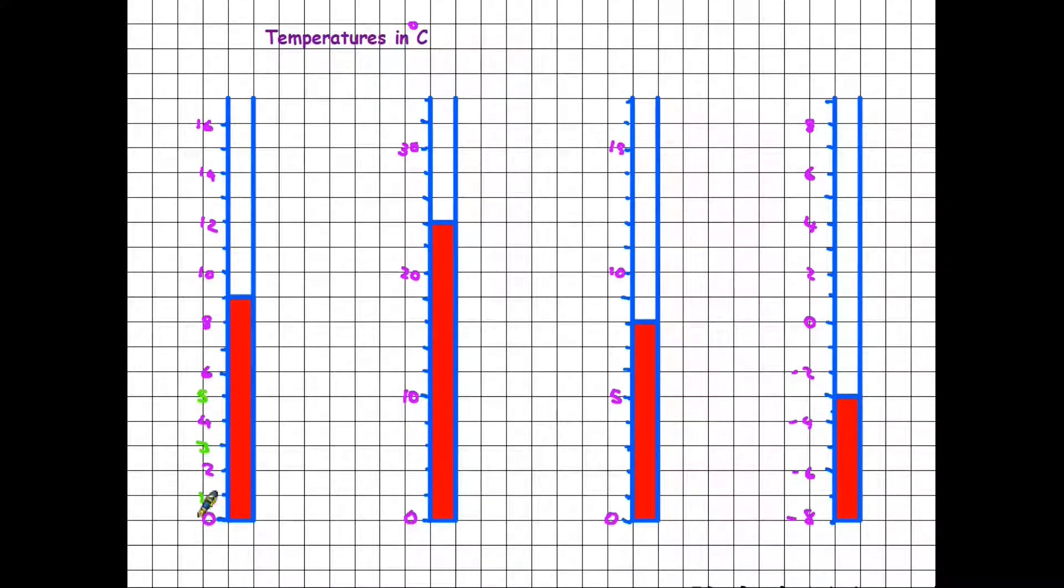When we are looking to read the temperature on the scale, in this case it comes to here - there is no number. Therefore, we have to look at the numbers either side: 8 and 10. What number falls in between 8 and 10? It is 9, because in this scale one square is one degree.